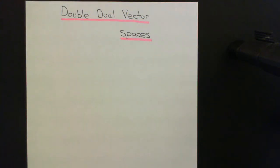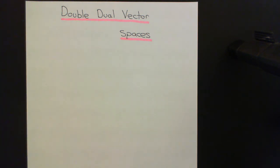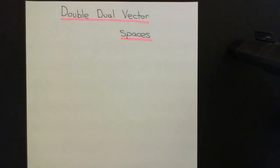Welcome to this next video in the playlist on vector spaces. In previous videos we've discussed what a dual vector space is, and we've also discussed the dual basis for a dual vector space of a finite dimensional vector space with a basis. What we're now going to discuss is the double dual of a vector space. We'll start off with the definition broadly, then very quickly recoil back to finite dimensional vector spaces, though the definition extends to infinite dimensional vector spaces as well.